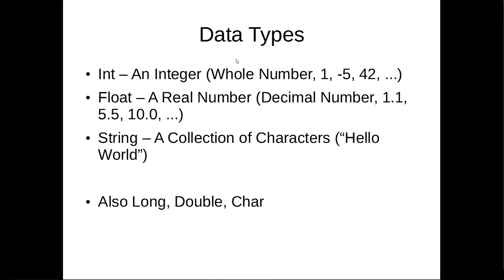Data types — what does a computer understand? A computer doesn't actually understand very much except for numbers, and we have to tell it how to interpret those numbers. The two big ones we'll use through this course are int, which is an integer — a whole number, either negative or positive, like 1, negative 5, 42, or 0. A float is a real number, so these are decimal numbers like 1.1, 5.5, 10.0, negative 48.9. One thing to understand about floats is that the computer has to estimate, so there's always a small margin for error when using floats.